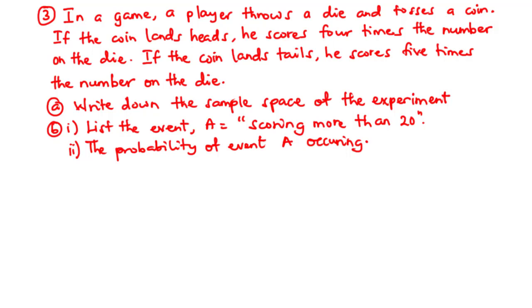Part A: write down the sample space of the experiment. Part B.i: list the event A, scoring more than 20. And then B.ii: find the probability of event A occurring.